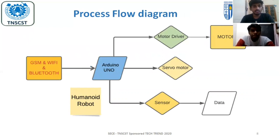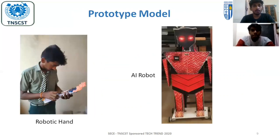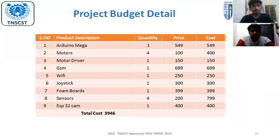Our project process flow: when a command is sent from the GSM module, Wi-Fi module, or Bluetooth module, it goes to the Arduino. The Arduino sends commands to motor drivers, servo motors for the robotic hand, and sensors to detect humidity, temperature, pressure, and other data. This is our prototype model of our robot. Our project budget details are shown here, and we are presenting our project video.